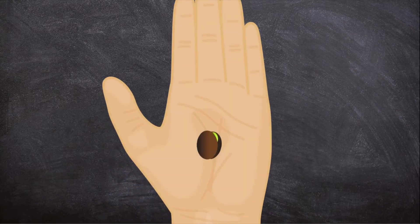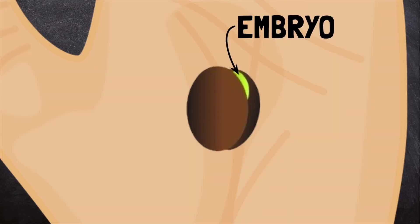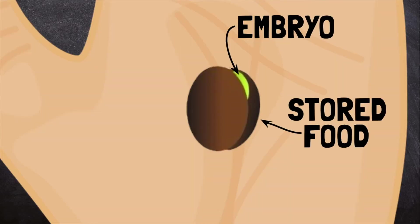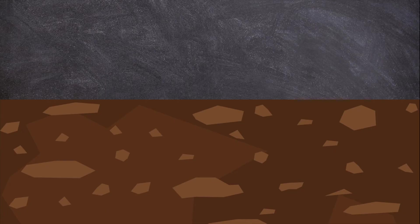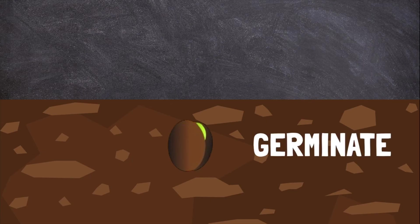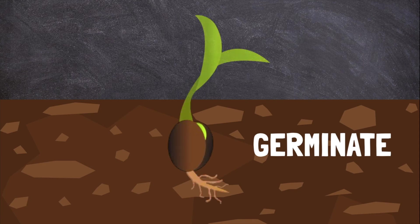Most new plants grow from seeds. Inside the seed is an embryo and food to keep the embryo alive. When a seed is planted in a dark, wet place like underground, it germinates and begins to grow into a plant. The seed splits open and roots and stems grow out of it.